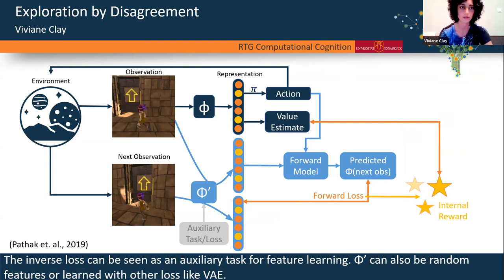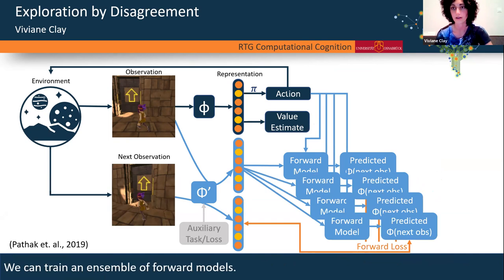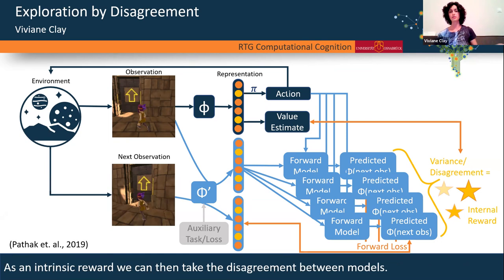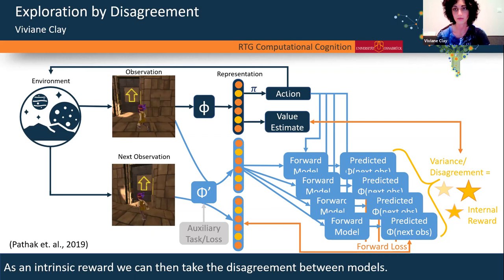This is an extension called exploration by disagreement. Instead of one forward model, you have five or ten forward models, all with the same task of predicting the next observation. The internal reward is the disagreement between predictions. In a familiar state, all forward models make similar predictions. In a novel state, they don't know what to do yet and their predictions will be quite different — that disagreement signals an interesting state.